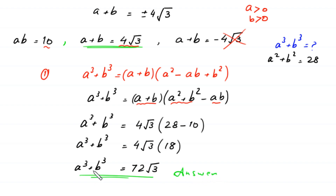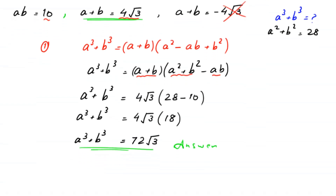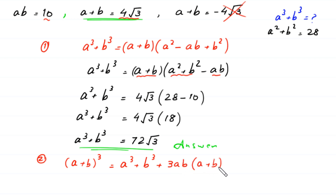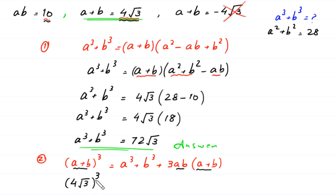Now we find a³ + b³ using a second method. We use the algebraic identity (a + b)³ = a³ + b³ + 3ab(a + b). Substituting a + b = 4√3 and ab = 10, we get (4√3)³ = a³ + b³ + 3(10)(4√3).